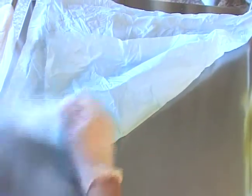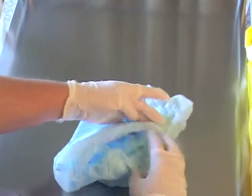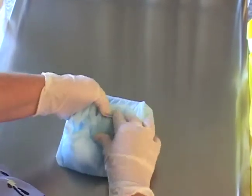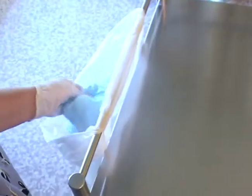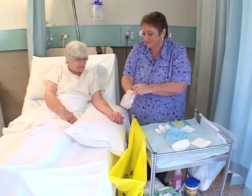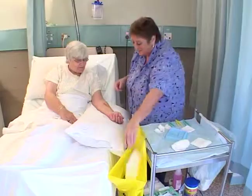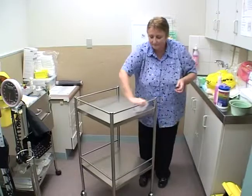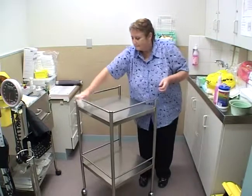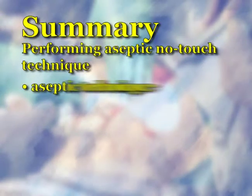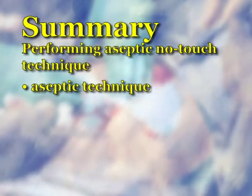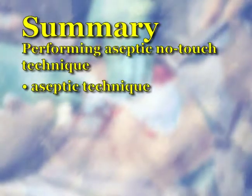Discard all waste by wrapping it in the sterile field drape and disposing of it in the appropriate waste receptacle. Remove gloves and discard. Decontaminate hands. Wipe down the trolley with disinfectant. When performing an aseptic dressing, the aseptic no-touch technique should be applied to all steps.